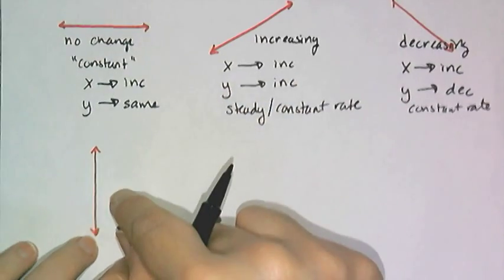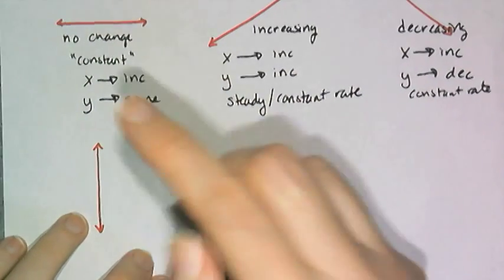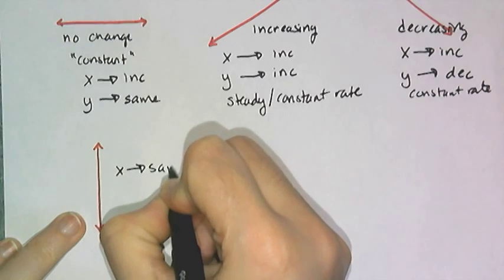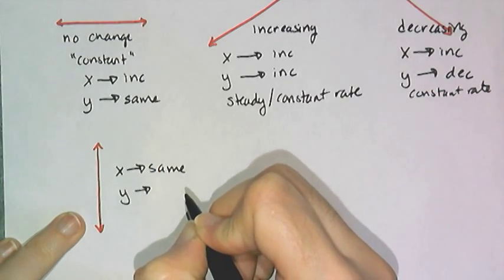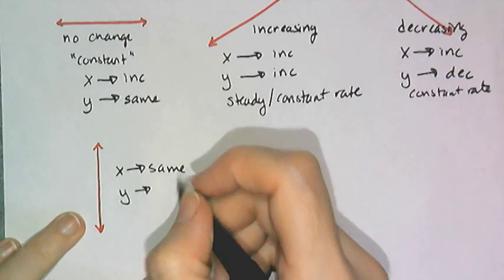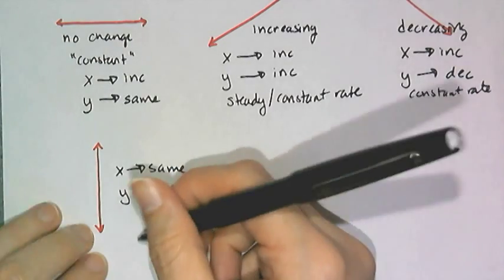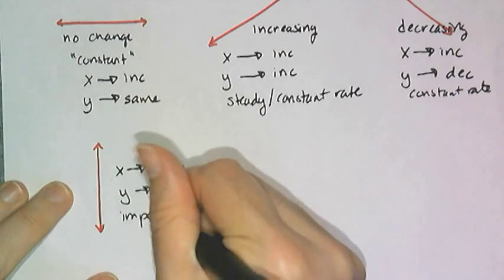Now this one here is special, because what you have here is that X is staying the same, and Y is, well, it could be increasing or decreasing depending on your perspective. This is kind of what we're going to call impossible.